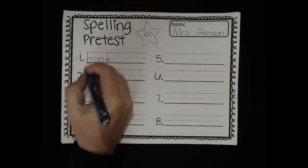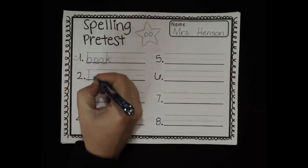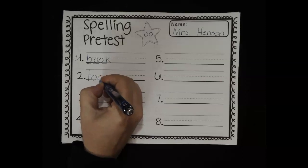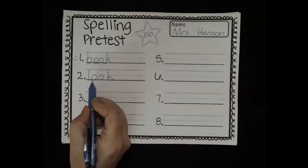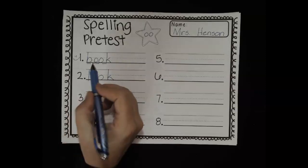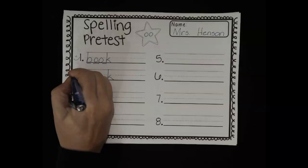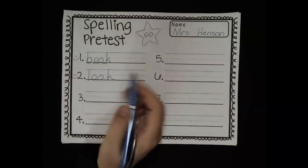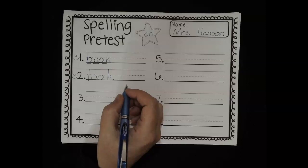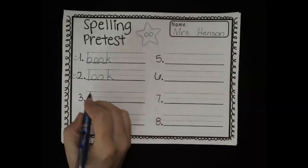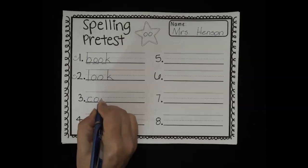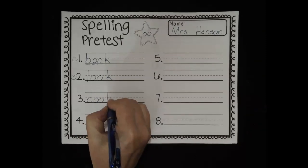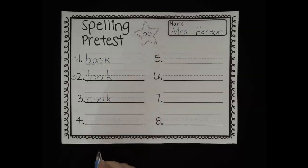Number two was look. We hear L, uh, those are those two O's, K. L-O-O-K. If you got it right, put a little smiley face. If not, that's okay. Just write it above. All right, number three is cook. C, uh, there's those two O's, K. C-O-O-K.